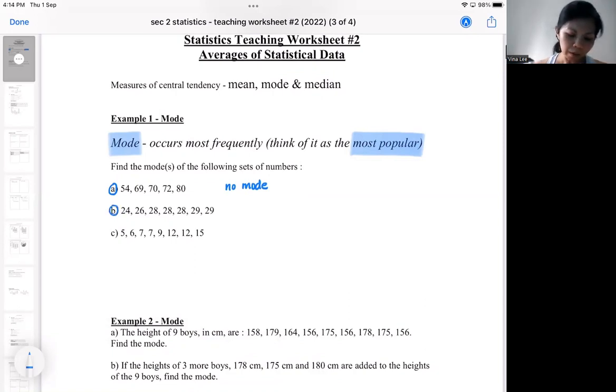But if you refer to the second set of data, you look: 24, 26, 28 is repeated like three times. Can you see? It's actually something that looks quite popular. So in this case, my mode is 28.